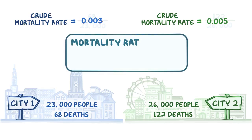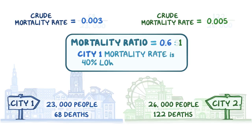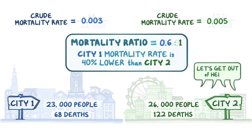We can use a mortality ratio, or a ratio of 2 mortality rates, to compare the crude mortality rate of City 1 to the mortality rate of City 2, and we get a ratio of 3 to 5. If we divide both sides by the bigger number, 5, we get a mortality ratio of .6 to 1, which means that in one year, City 1 has a mortality rate 40% lower than City 2.